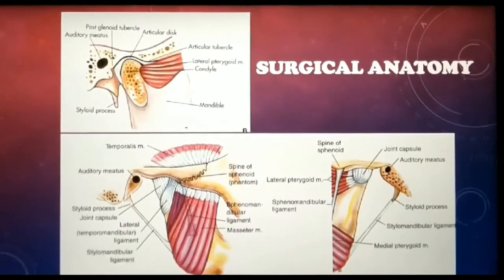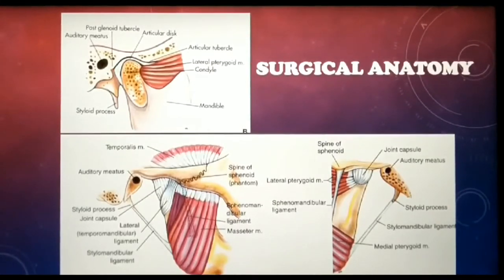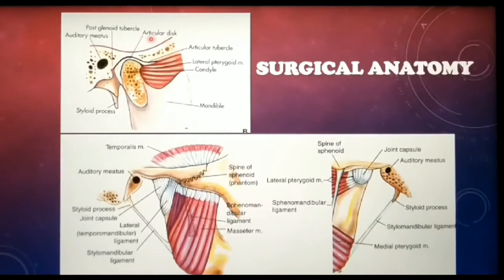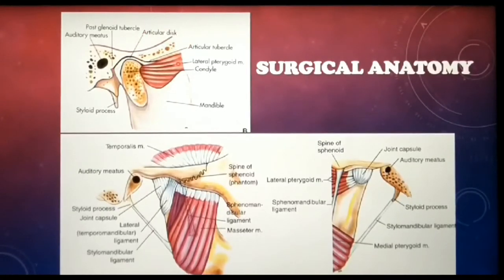TMJ is formed by the mandibular condyle fitting into the mandibular fossa, and the two bones are separated by the articular disc.